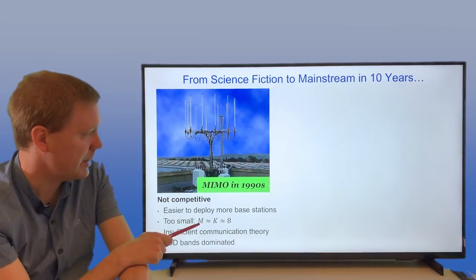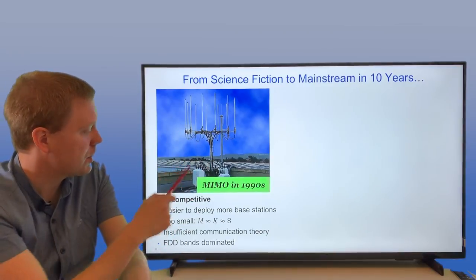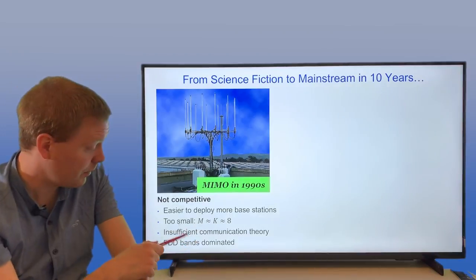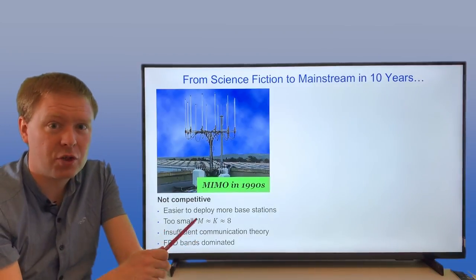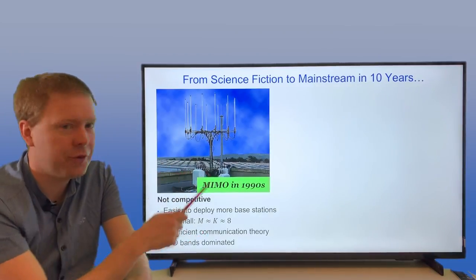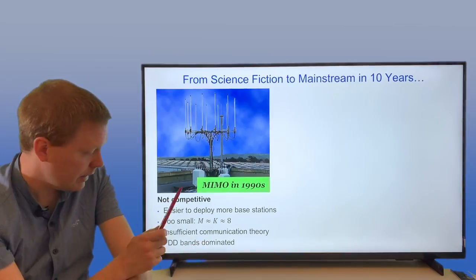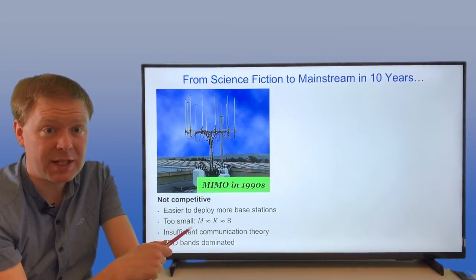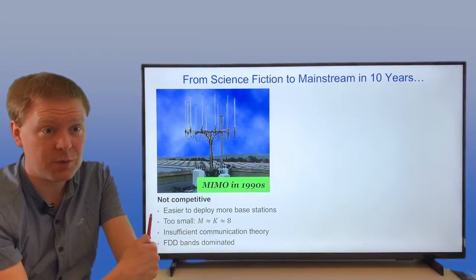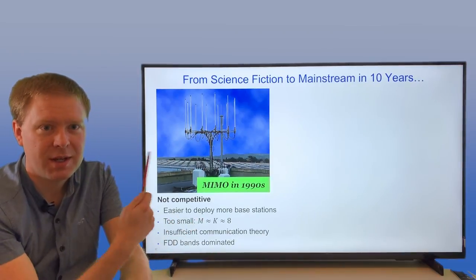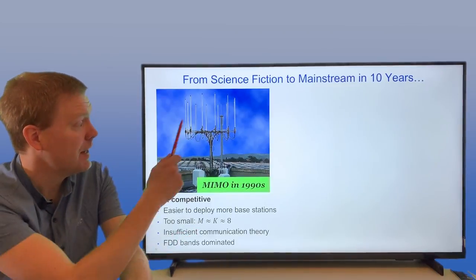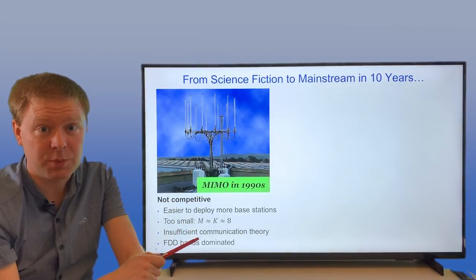You had a fairly small number of antennas. In this figure, there were 12, but let's say we had around eight antennas and eight users in general. It was insufficient communication theory, so we didn't know how to operate this in the best possible way. Most bands that were used for wireless communication were FDD bands at that time, so we could only use that grid or beam approach instead of the uplink pilot approach, even if this system was using the TDD reciprocity approach.